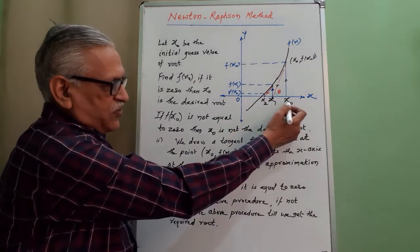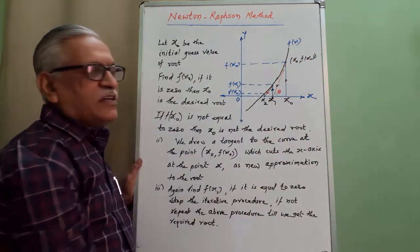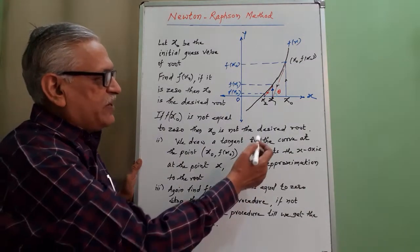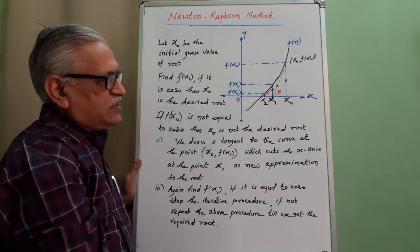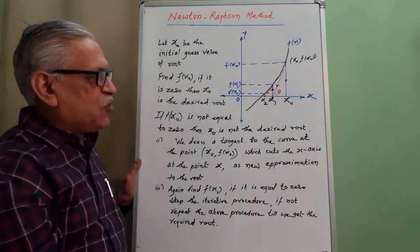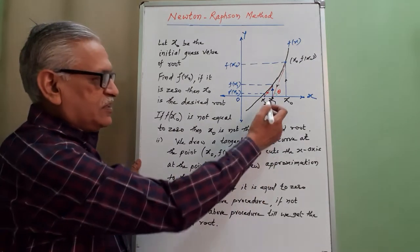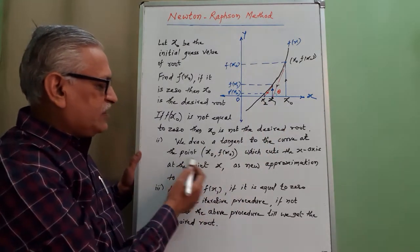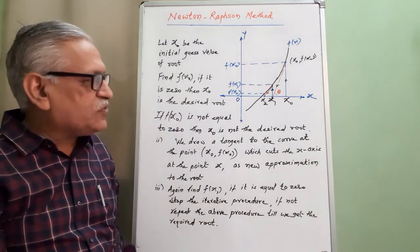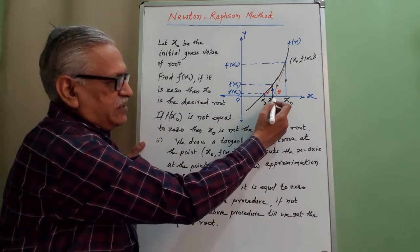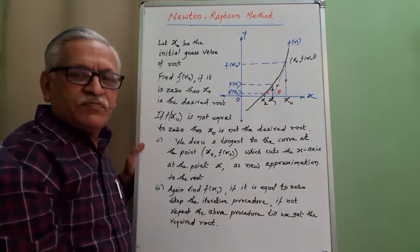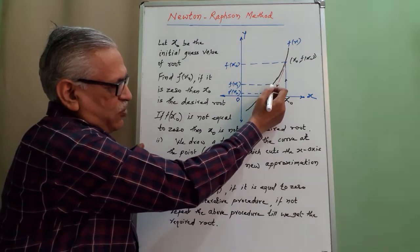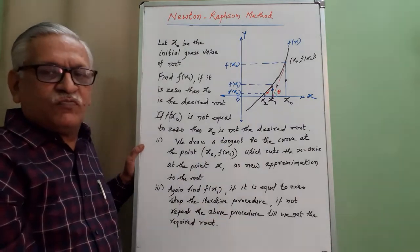Starting with initial guess x₀, we find f(x₀). If f(x₀) = 0, we have the root. If not, we draw a tangent to the curve which meets the x-axis at new point x₁ — the new approximation. We check f(x₁): if it is 0, that is the root; if not, we find the function value f(x₁) on the curve. If equal to 0, stop; otherwise, draw another tangent meeting the x-axis at x₂.